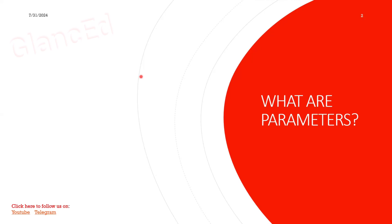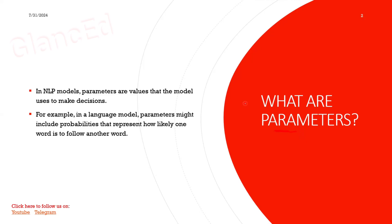How we are using salt for your recipe, the model also uses something called parameters. We use salt so the recipe tastes better; similarly, parameters are used so that the model can generate accurate results. In NLP models, parameters are values that the model uses to make decisions.